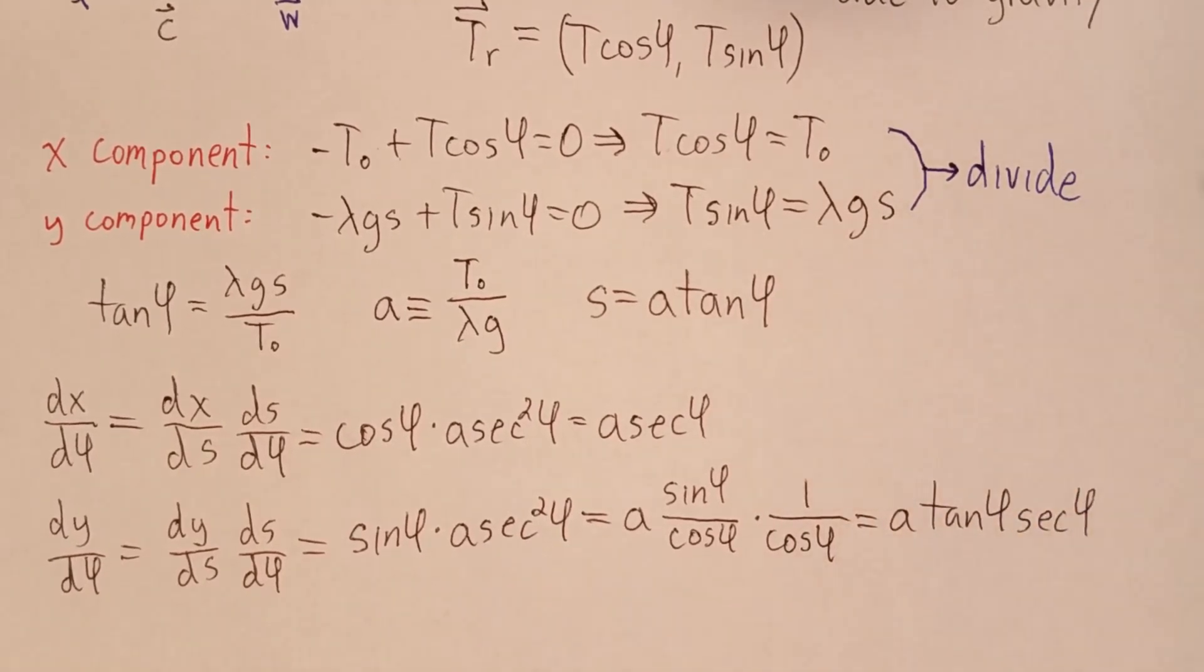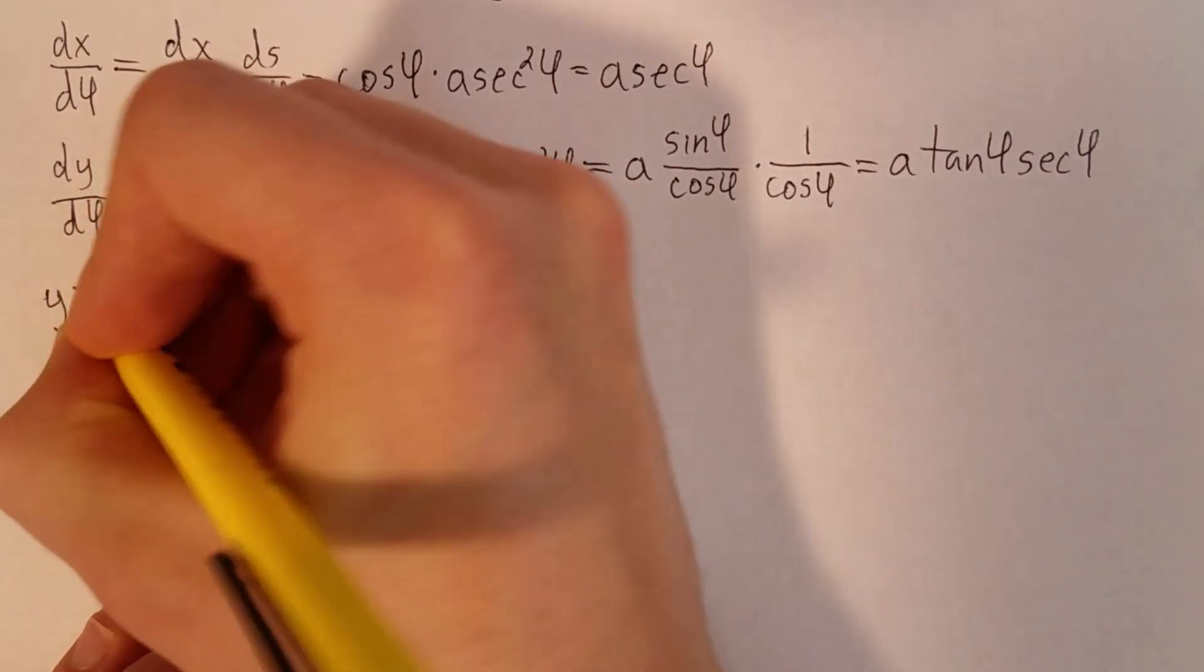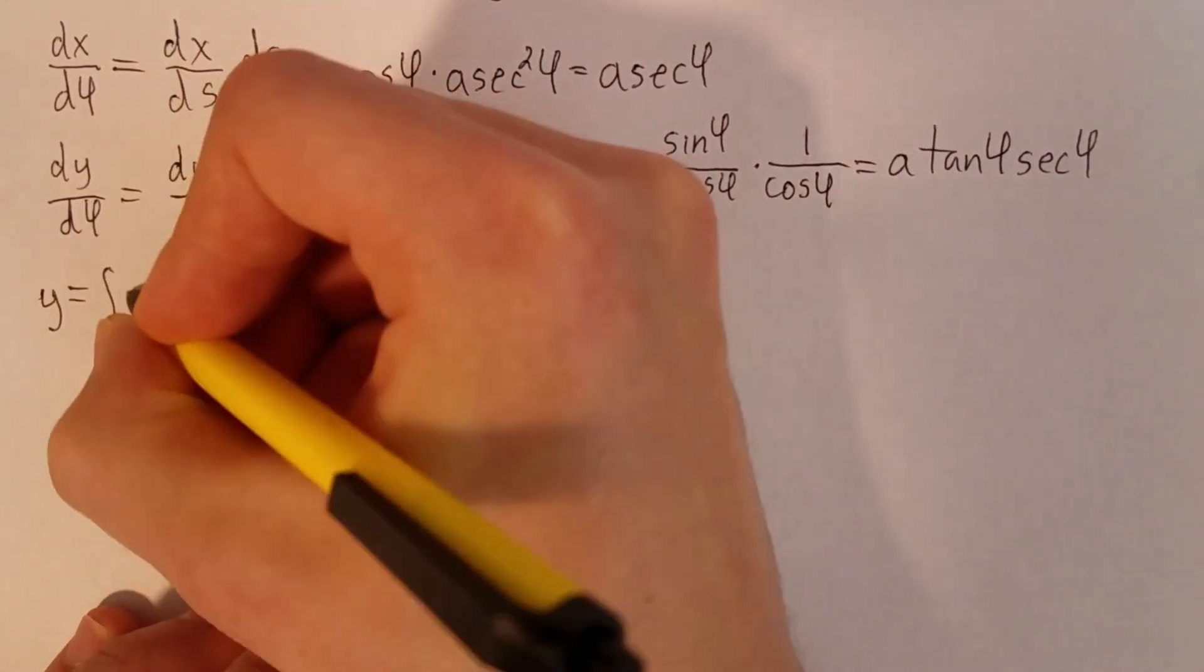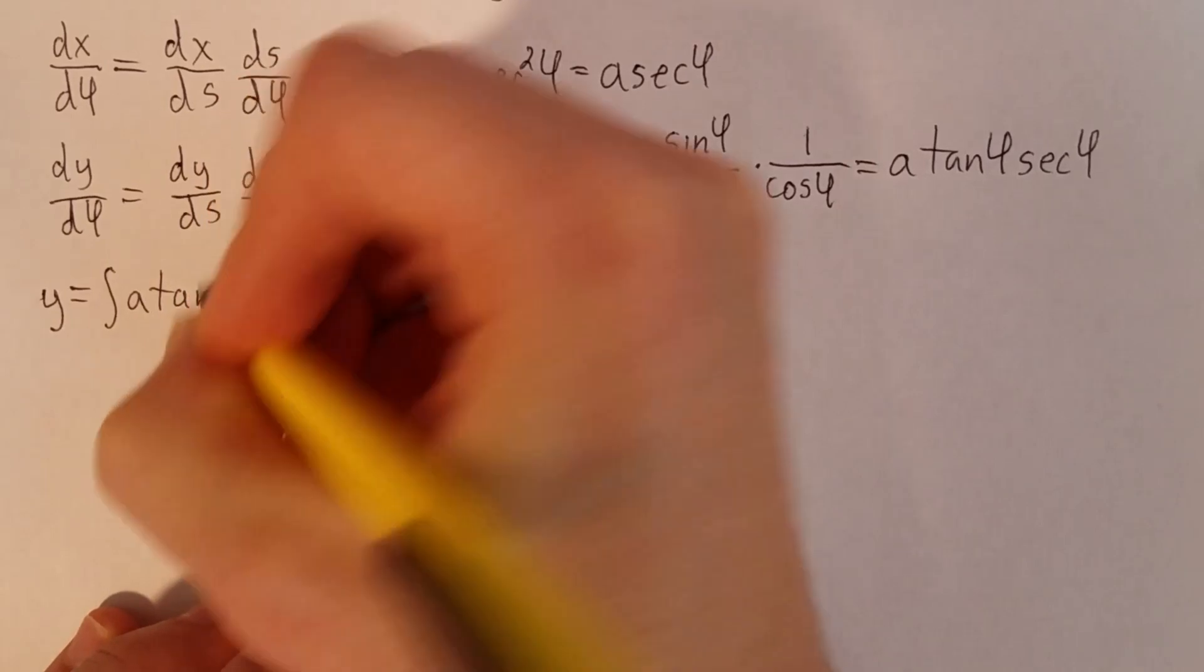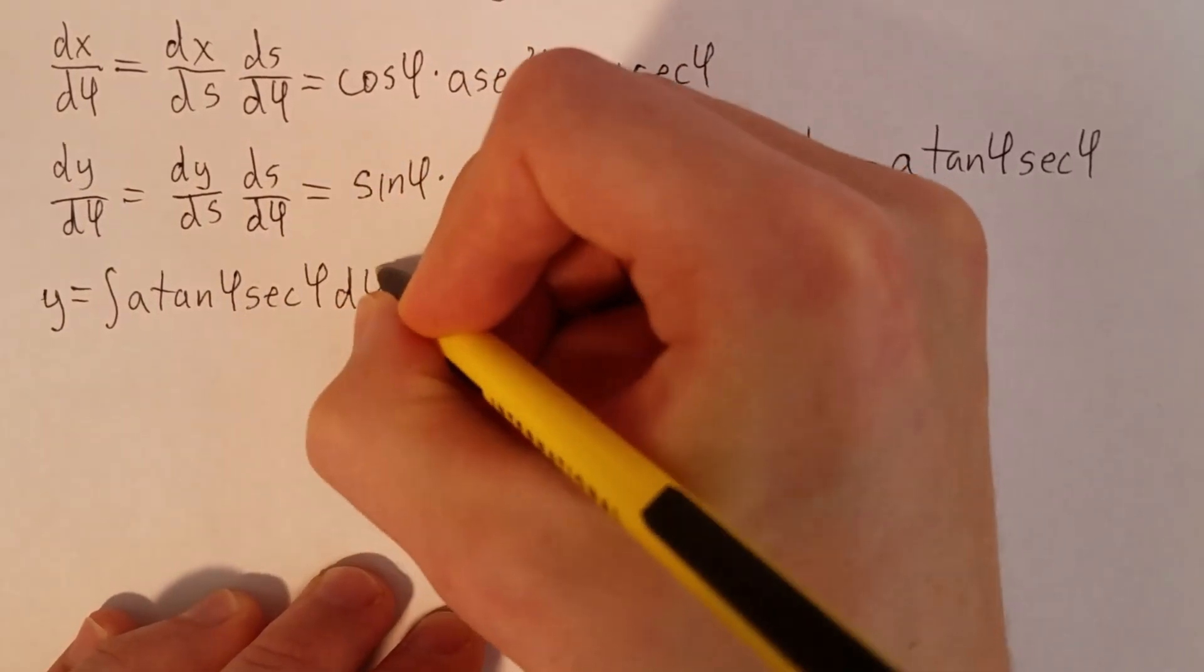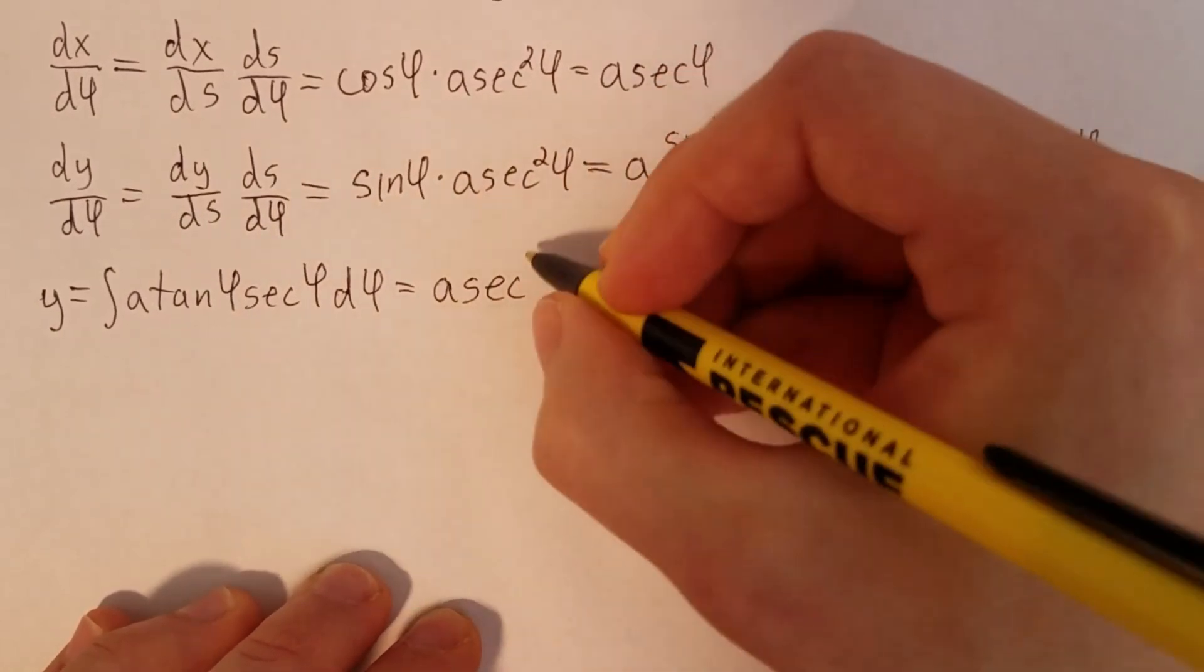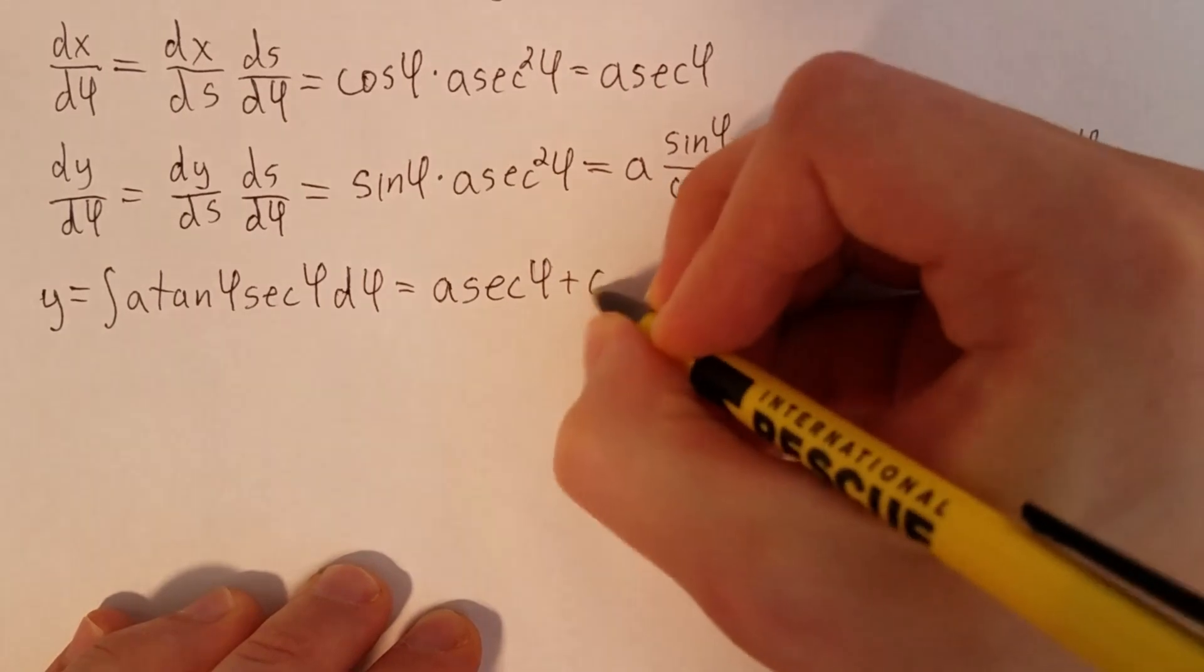Now we have a pair of differential equations that we would like to solve for x and y, and then hopefully find out how they're related to each other. Of these two, y is easier, so we'll do that one first. y is going to be the integral of a tangent φ secant φ dφ, which, as you might remember from calculus, is a secant φ. But we do need to add an arbitrary constant of integration, c1.